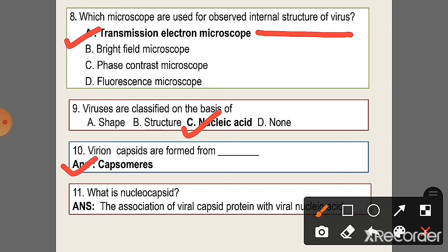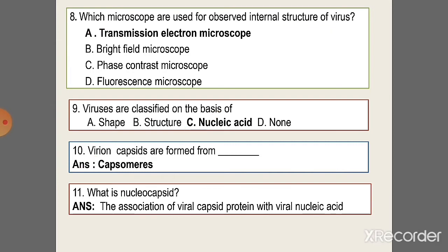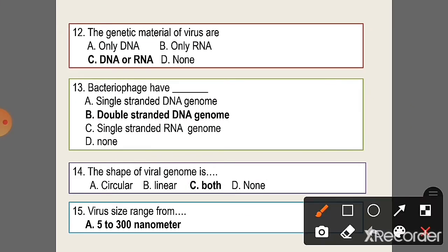Question 11: What is nucleocapsid? The association of viral capsid protein with viral nucleic acid. Question 12: The genetic material of a virus — option C, DNA or RNA. Question 13: Bacteriophage have — option B, double-stranded DNA genome. Question 14: The shape of the viral genome is — option C, both circular and linear.